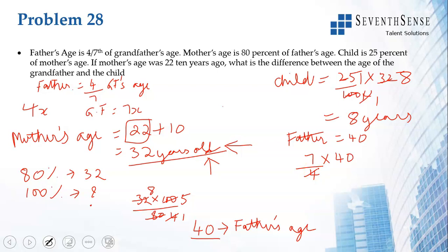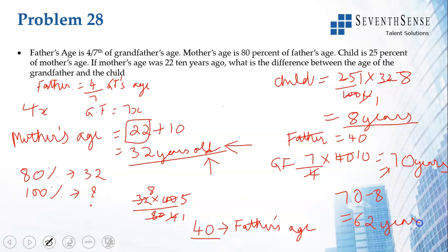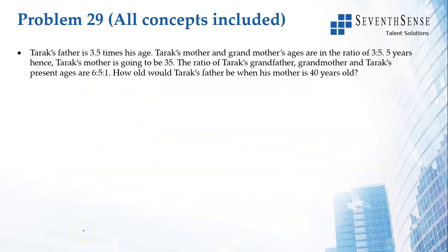Father's age by grandfather's age is 4:7, and 40/70 = 4/7, which checks out. The difference between the grandfather's age and the child's age is 70 − 8 = 62. That is the answer.